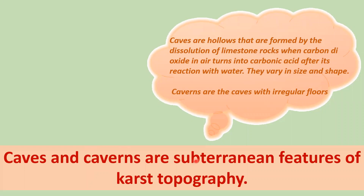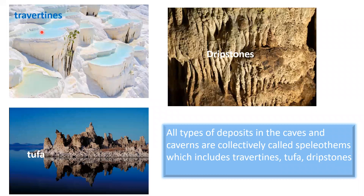Caves and caverns are subterranean — that is, beneath the surface of the earth — features of karst topography. Caves are hollows formed by the dissolution of limestone rocks when carbon dioxide in air turns into carbonic acid after reacting with water. They vary in size and shape, whereas caverns are caves with irregular floors. The types of deposits found in caves and caverns — travertines, dripstones, and tufa — are collectively called speleothems.